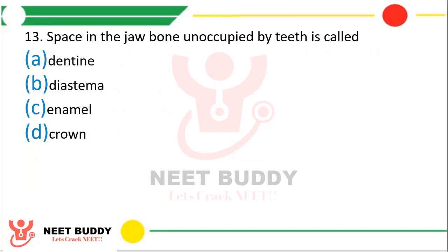Question 13. Space in the jawbone unoccupied by teeth is called: dentine, diastema, enamel, or crown. The correct answer is option b, Diastema.